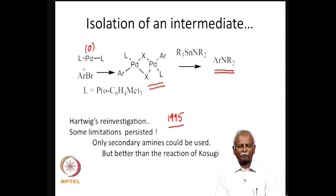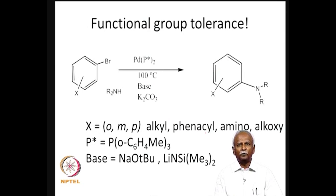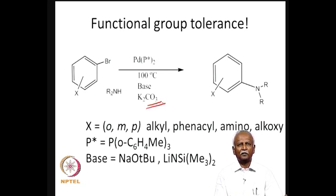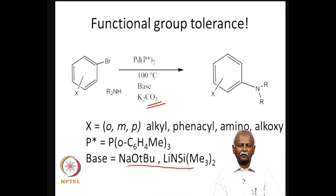He found that with sterically bulky phosphines, the reaction was more successful and better yields were obtained. But in spite of these improvements, he found that only secondary amines could be used — a limitation also present in the Kosugi reaction. What was interesting, however, was that it is now possible to have substituents on the aryl group. A typical reaction uses a phosphorus-stabilized palladium(0) as the resting state of the catalyst, with a base such as K₂CO₃, sodium tert-butoxide, or silyl amide.